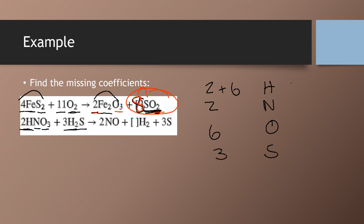Now, on the right-hand side, we have two nitrogens. We have two oxygens. We want to figure out what number needs to go here, and we have three sulfurs.